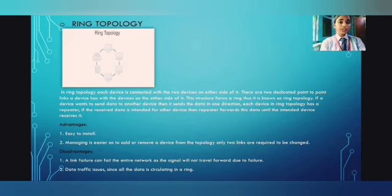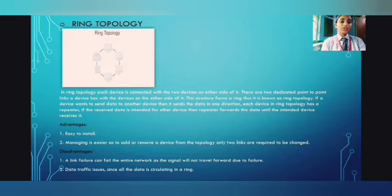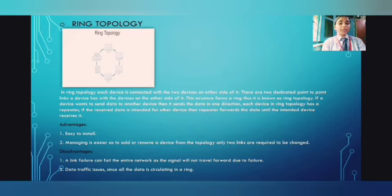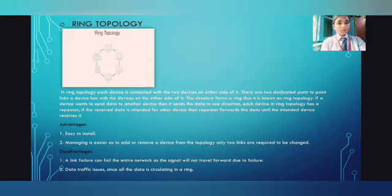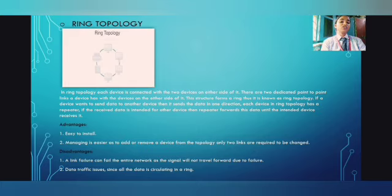The third topology is ring topology. In ring topology, each device is connected to the two devices on either side of it, forming two dedicated point-to-point links. This structure forms a ring. If a device wants to send data to another device, it sends the data in one direction. Each device in ring topology has a repeater — if the received data is intended for another device, the repeater forwards the data until the intended device receives it. Advantage: easy to install and manage; adding or removing a device only requires changing two links. Disadvantage: data traffic issues since all data circulates in the ring.